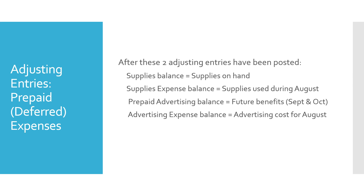To summarize, after these two adjusting entries have been posted: the balance in the supplies account equals supplies on hand; the balance in supplies expense equals the supplies used during August; the prepaid advertising account balance reflects the future benefits — the payments for September and October advertising; and the advertising expense balance reflects the advertising cost for the current accounting period, which is August.